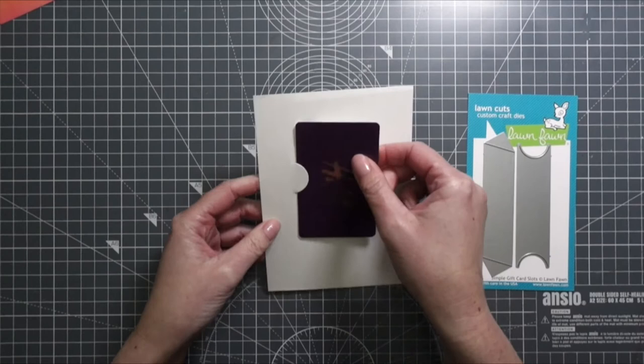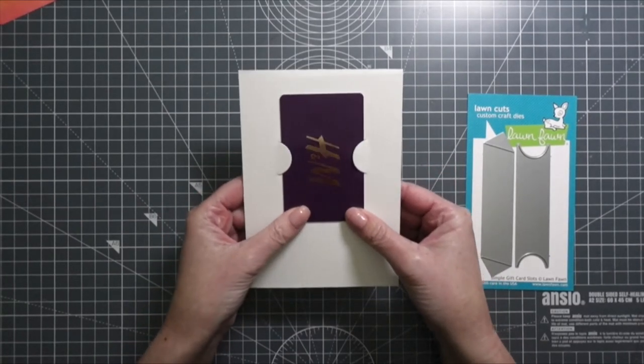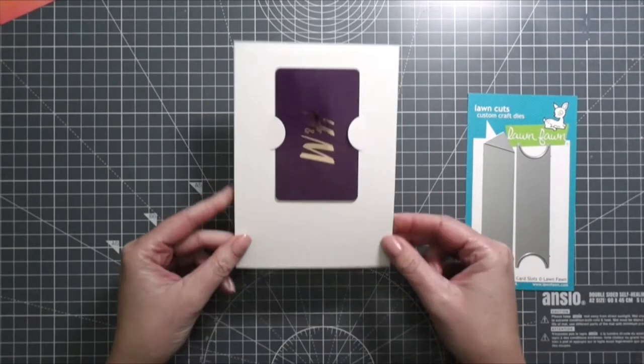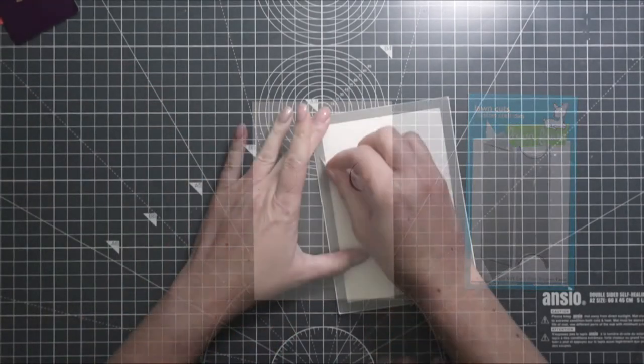I hope my description makes sense, but if you have any questions, don't hesitate to ask in the comments below. After I had both slots die cut, I used the stitch rectangular die from Create a Smile.